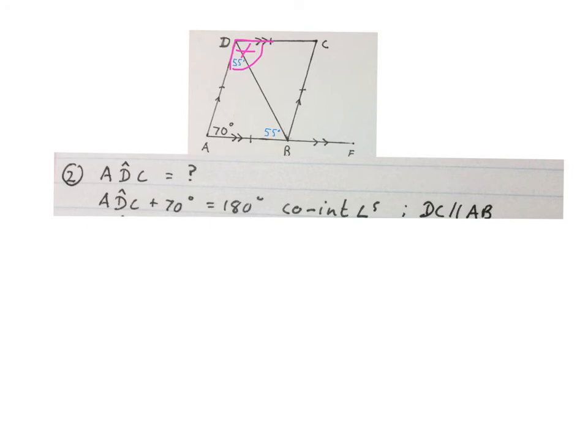The co-interior angles will be supplementary. We minus 70 on both sides, so ADC is 110 degrees.